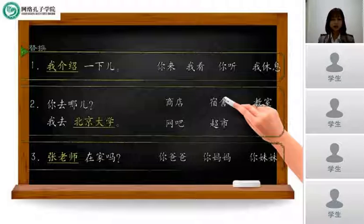So the sentence is 我介绍一下. How to use 你来 to change the sentence? Yes, 你来一下, please come here. Now, next one is 我看一下. I will write the sentence for you. 我看一下, let me see.